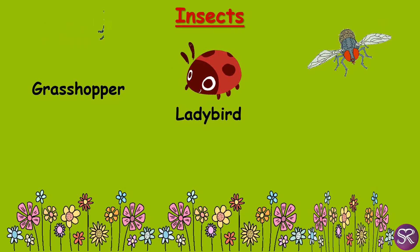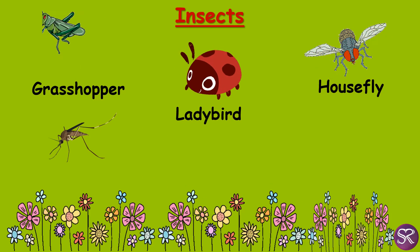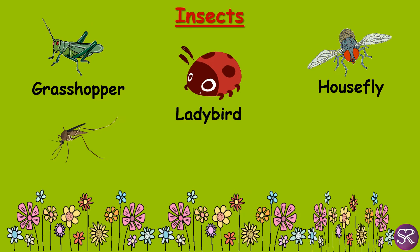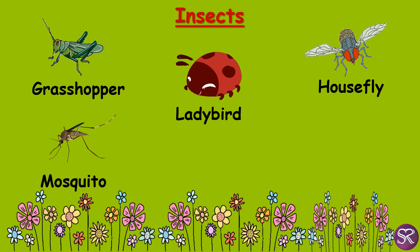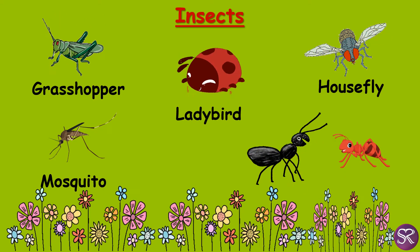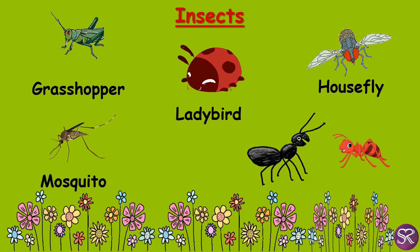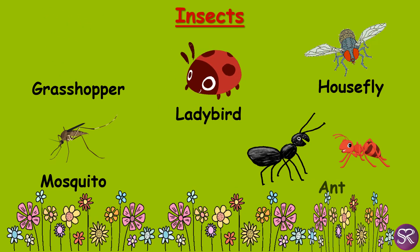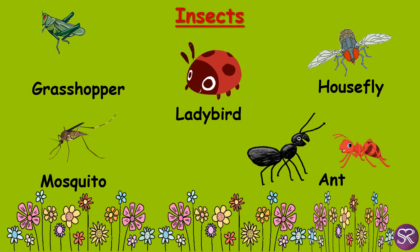Dirty, dirty housefly. It's a mosquito — it sucks human blood. It's an ant. Here we have two ants. One is a black ant and the other is a red ant. Ant is a very hard-working insect.